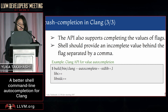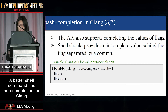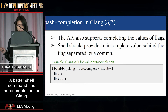This API also supports the completion of the values of flags — this was our main focus this summer. You can provide an incomplete value behind the flag, separated by comma, to get autocompletion for its values. In this example, all values of minus std live equal which start with L are displayed from Clang.